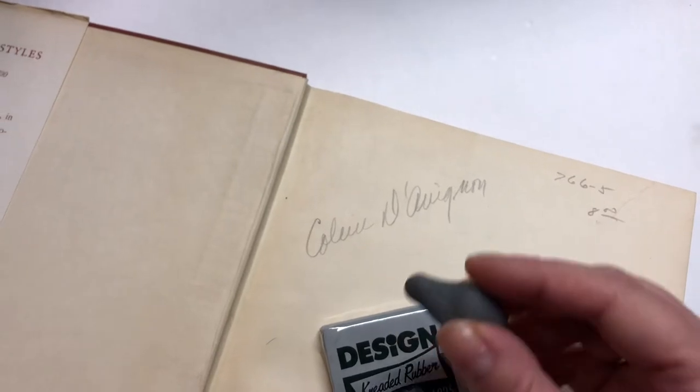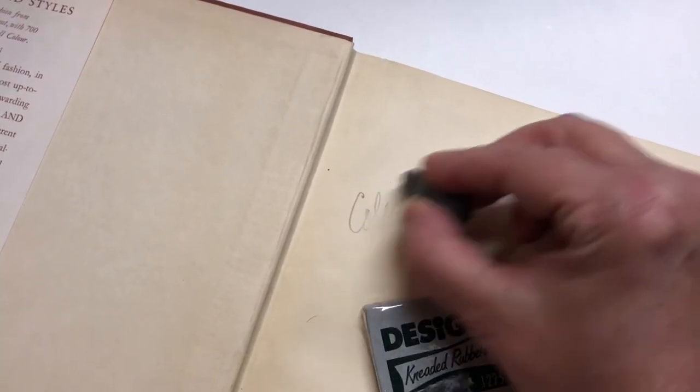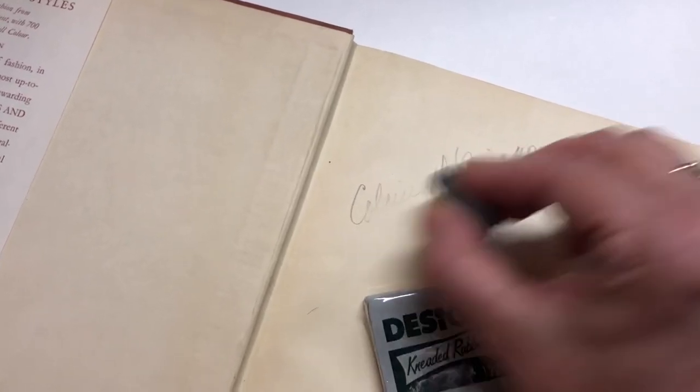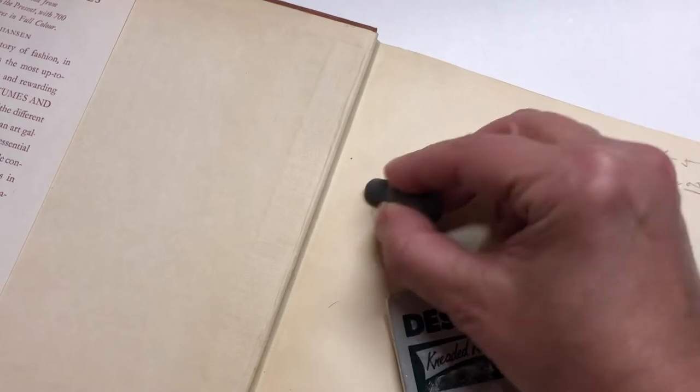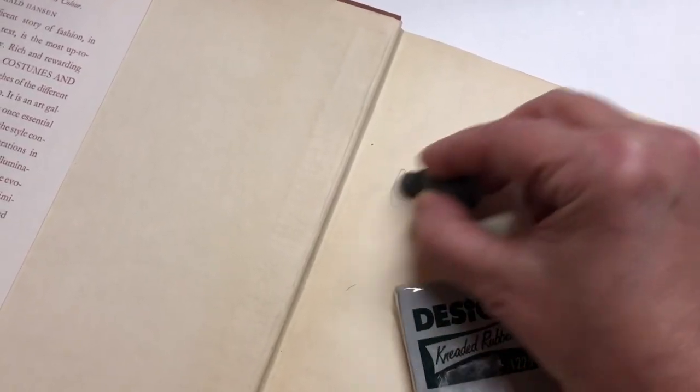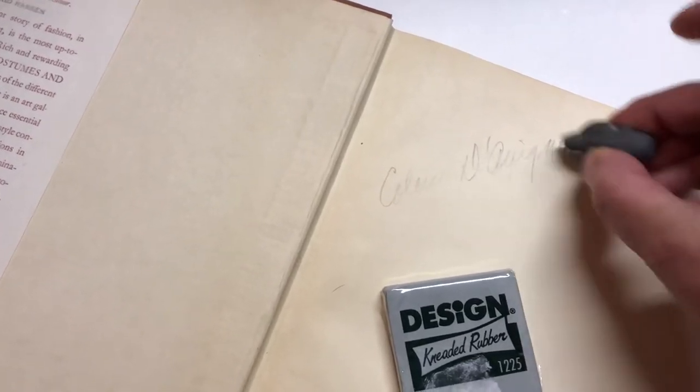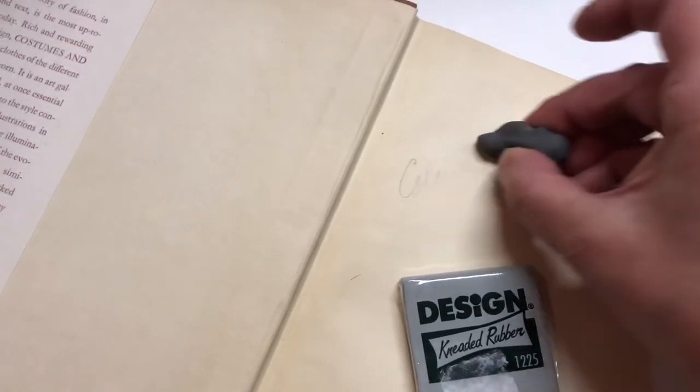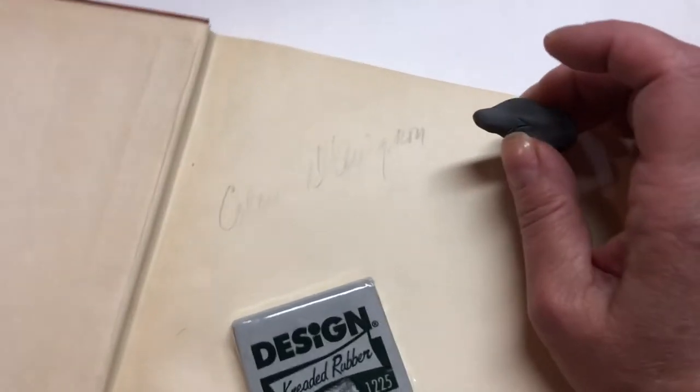...books is to use the kneaded eraser and to go in one direction rather than back and forth. That will preserve the paper primarily—that's the reason—and also it prevents you from wrinkling the page by accident...